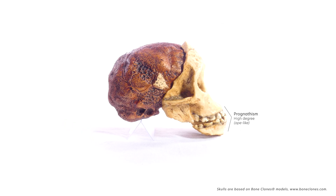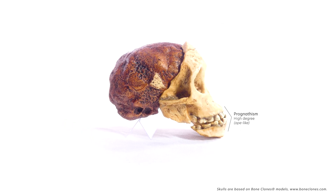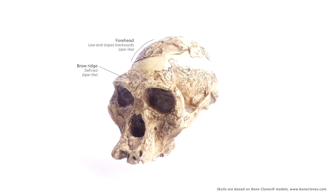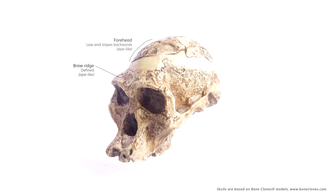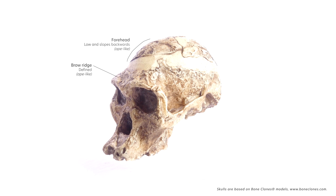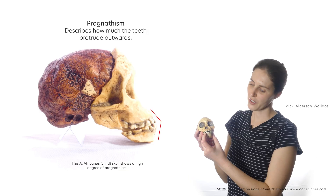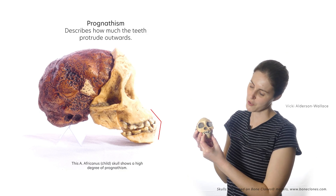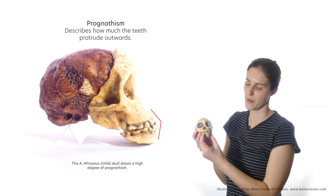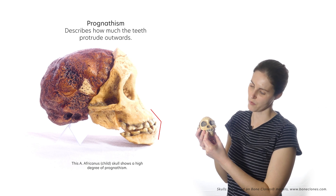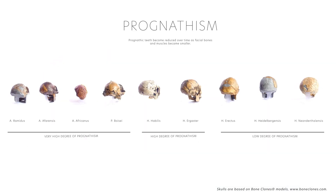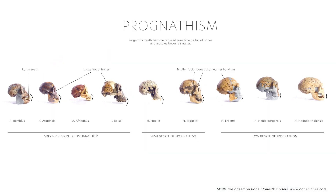Ape-like features include some prognathism of their teeth, a small but defined brow ridge, and a low and backward-sloping forehead. Prognathism became reduced over time as the jaws became lighter and smaller. Earlier hominins had a protruding jaw owing to the large bones and muscles needed to support large teeth.